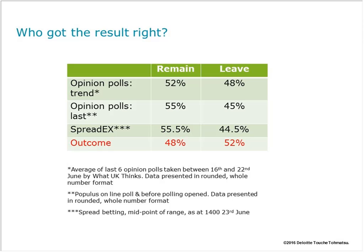On our agenda, we have four key areas to cover. Firstly, prospects for the UK and European economies and financial markets. Secondly, the future of the EU and Britain's place in Europe. Thirdly, the trade and tax implications of the UK's changing relationship with the EU. And finally, how businesses and organisations should respond to the changing environment. Without any further ado, let me hand over to Ian Stewart, who will lead through the first element, and we will be able to take questions at the end.